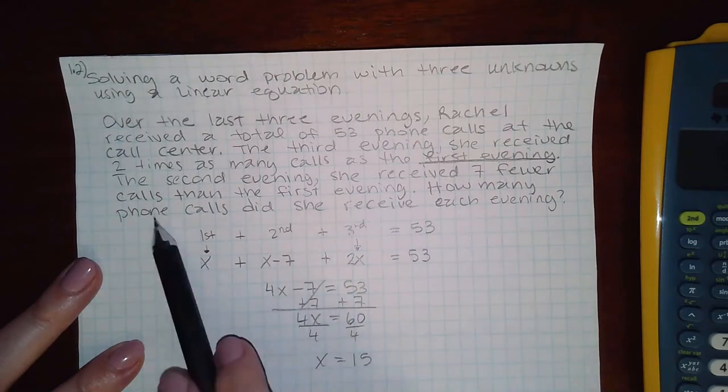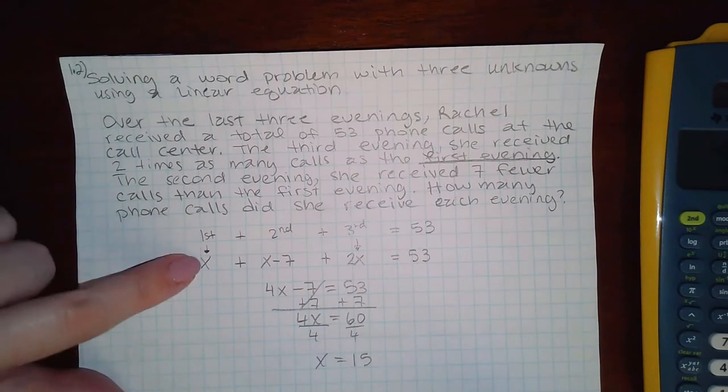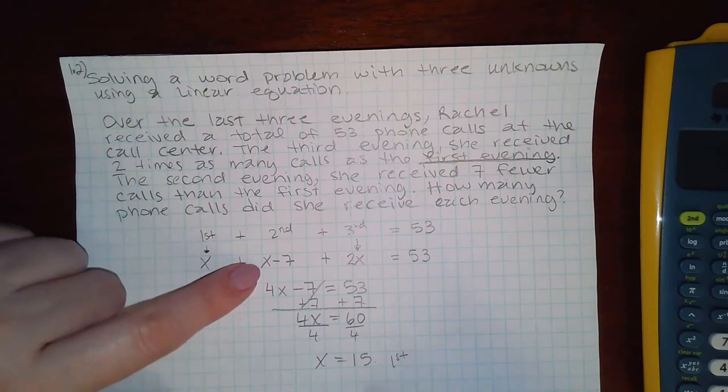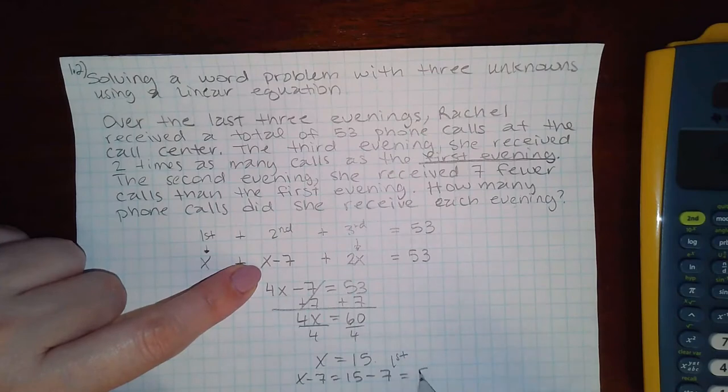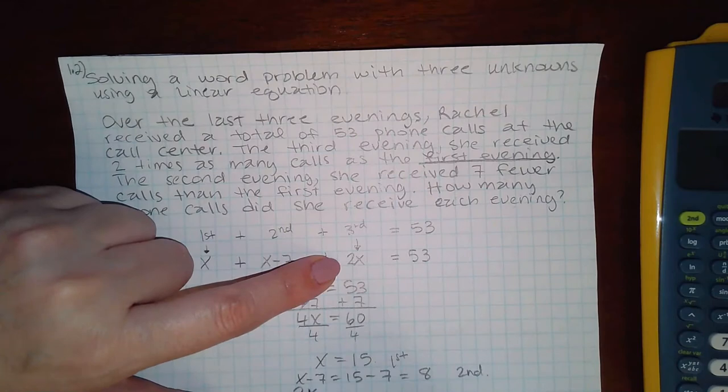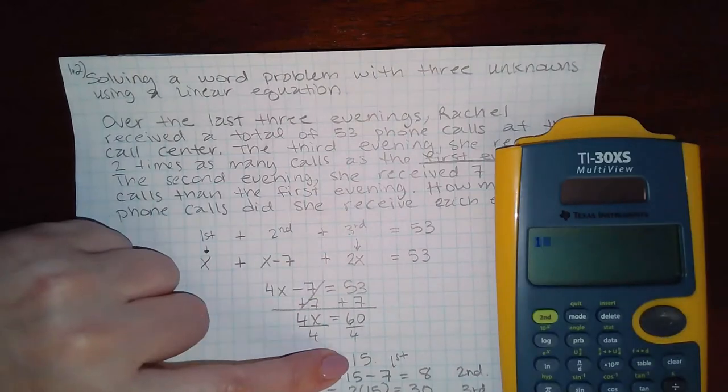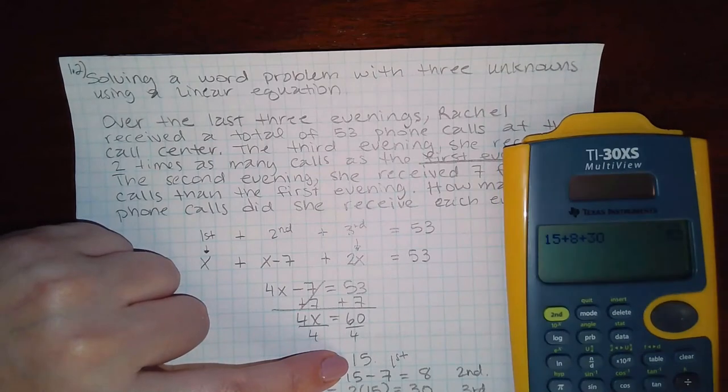It says how many calls did she receive each evening? So we know that x represents the first evening. So 15 on the first night, then x minus seven, which would be 15 minus seven, or eight, is how many calls she received on the second night. And then two x, which is two times 15, which equals 30, is how many calls she received on the third night. And if you double check your answer, just to make sure that all these numbers add up to equal 53, it does in fact equal 53. So we are good to go there.